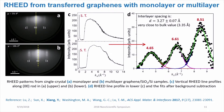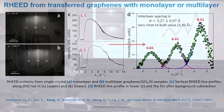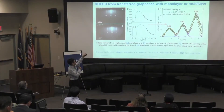Figures A and B are two RHEED patterns taken from monolayer graphene and multilayer graphene. For monolayer graphene, the vertical streak is continuous with uniform intensity. But for multilayer graphene, it is not continuous, and this is more clear when we do line scans along the center (00) streak.